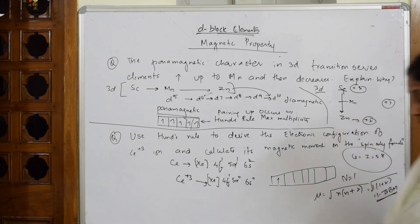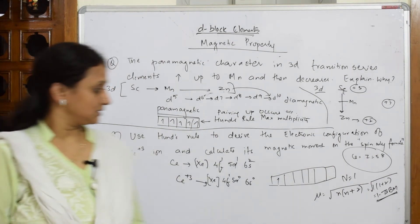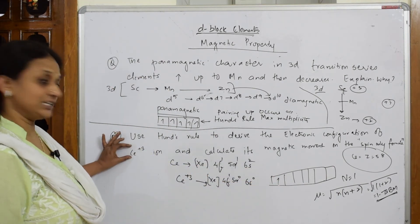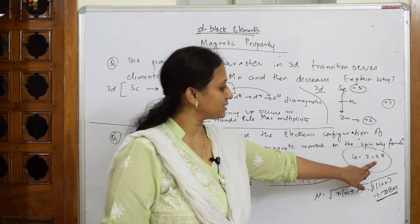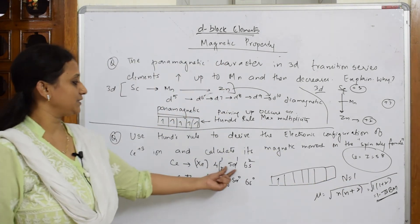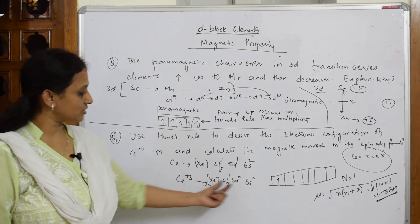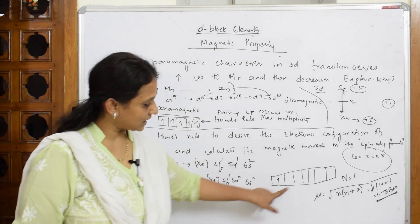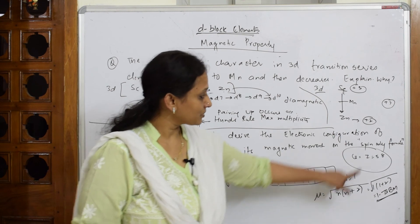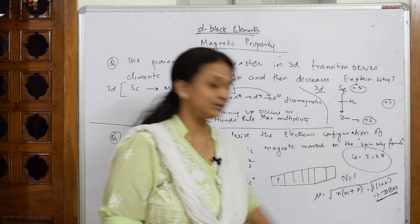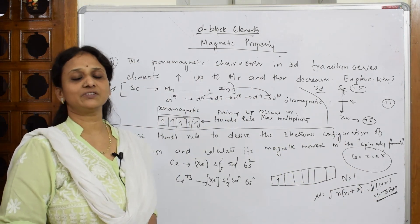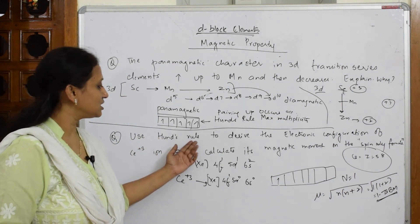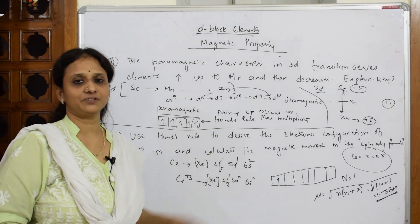This gives μ = 1.73 Bohr magnetons. So the magnetic moment of Ce³⁺ is 1.73 BM. The method was: given the atomic number, write the electronic configuration, remove the required electrons to get the ion, count the unpaired electrons, substitute into the spin-only formula, and calculate the Bohr magneton value.